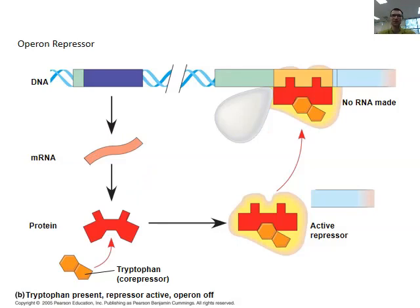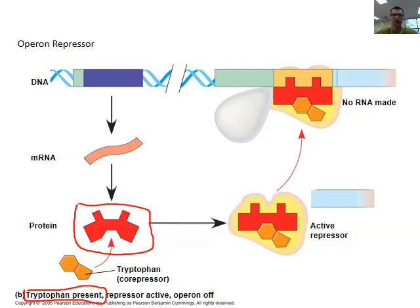Here we've got the opposite. Genes can be turned on and off like a light switch. After this bacteria has made all the tryptophan it needs, tryptophan is present — we don't need any more. Stop spending energy trying to make tryptophan; if your body tells you you're full, stop eating. So the repressor is activated. Tryptophan attaches to the repressor, which then attaches to the operon, and no RNA is made — the gene is no longer expressed.